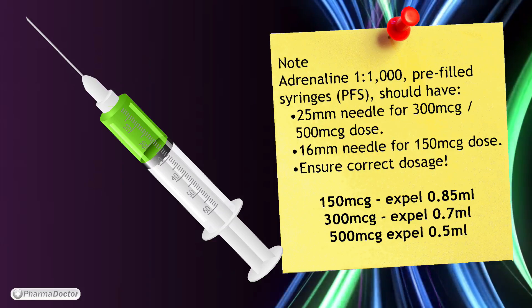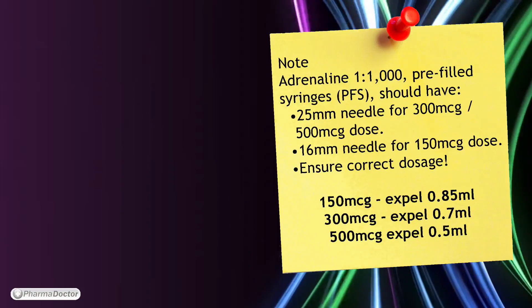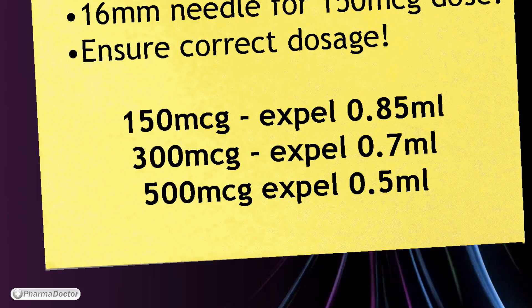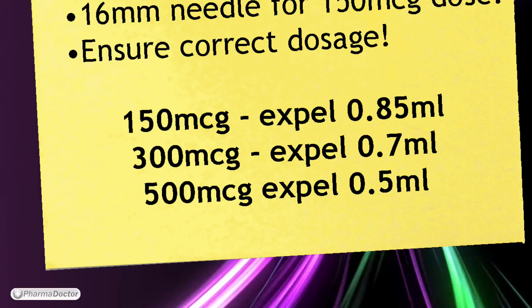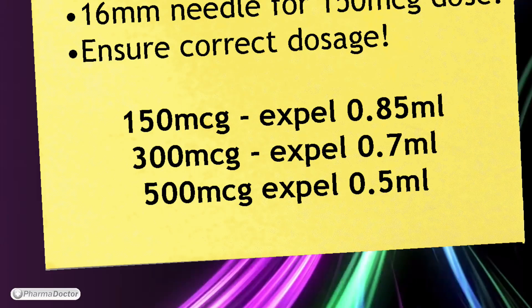Secondly, you need to ensure you inject the right dose. Therefore, in a 1 ml pre-filled syringe, you would expel 0.5 ml for the resulting 500 µg dose.